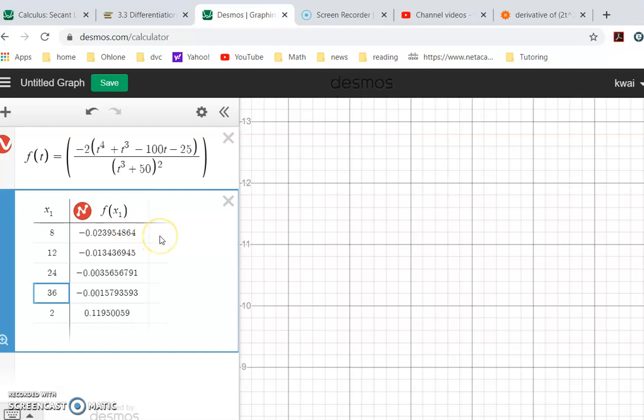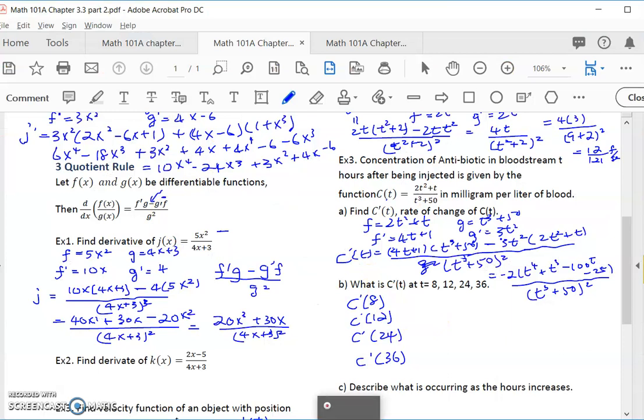So, this is negative 0.024, negative 0.013, negative 0.0035, so negative 0.002. They are all like 3 or 4 places behind decimal point, but they are all negative. Negative 0.024, negative 0.013, negative 0.004, but the negative is less and less. It's decreasing, but it's decreasing less and less.